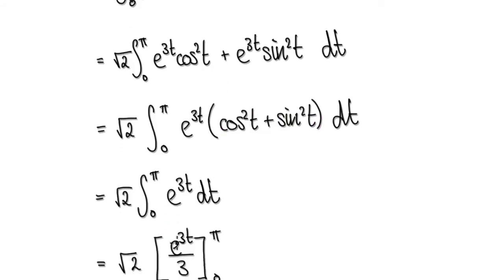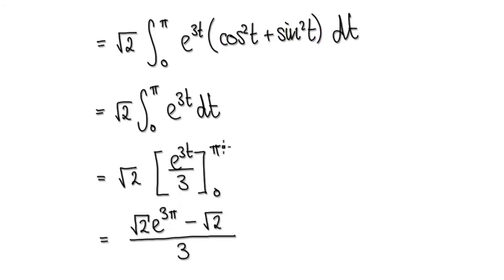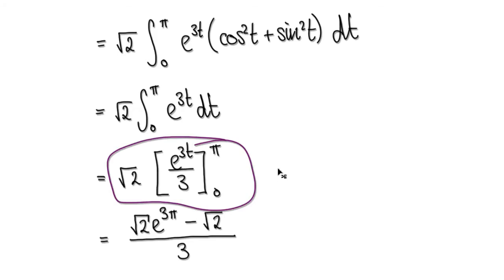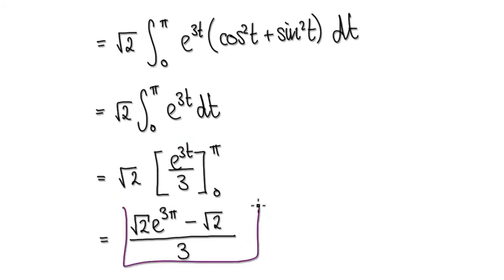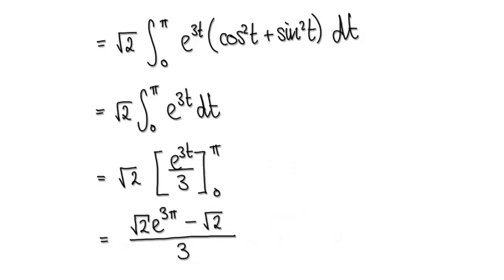√2 is a constant so we take it out. After integrating and evaluating, we get our final answer. The area underneath that surface along that spiral path is given by this result.